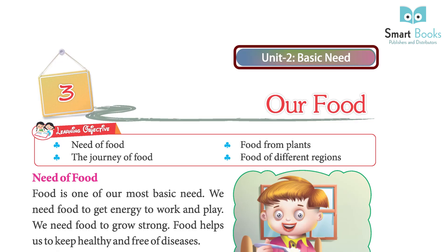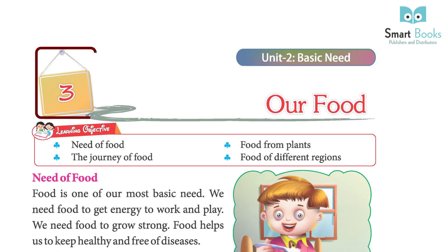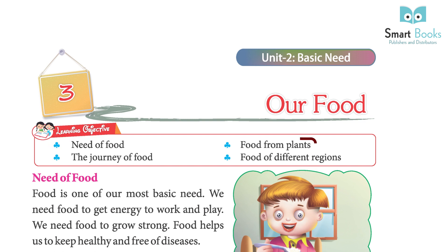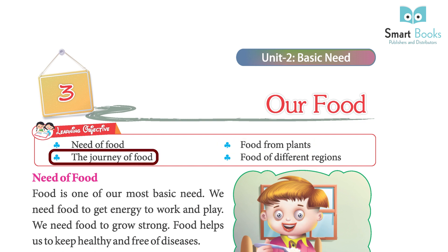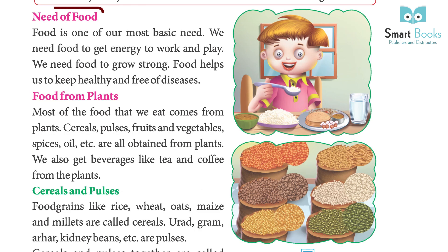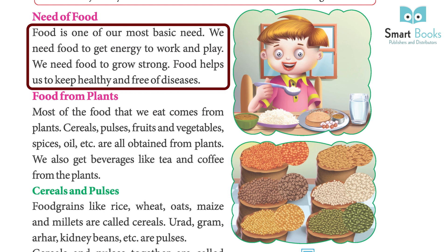Unit 2: Basic Needs, Chapter 3: Our Food. Learning objectives: need of food, food from plants, and the journey of food. Food is one of our most basic needs. We need food to get energy to work and play, and we need food to grow strong.